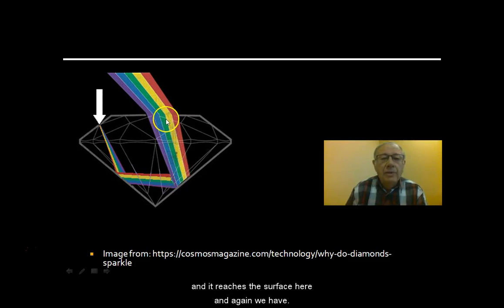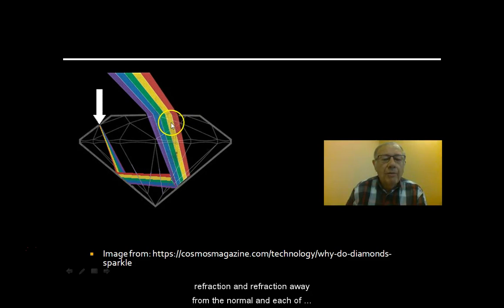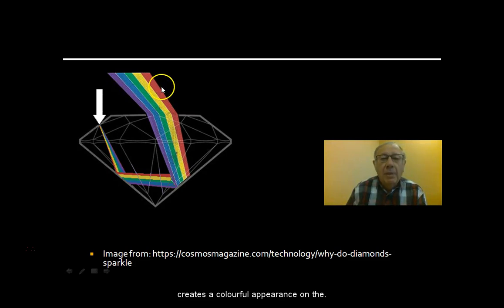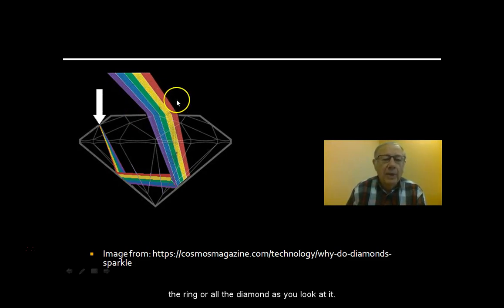It reaches this surface here and again we have refraction away from the normal, and each of these colors is refracted to a different extent. That creates a colorful appearance on the ring or the diamond as you look at it.